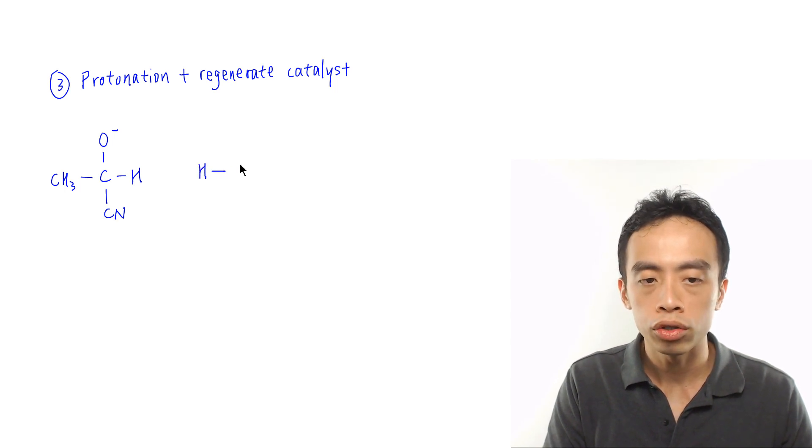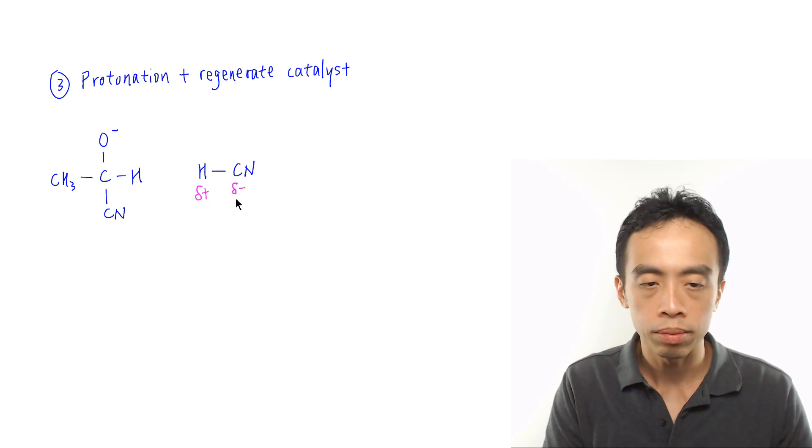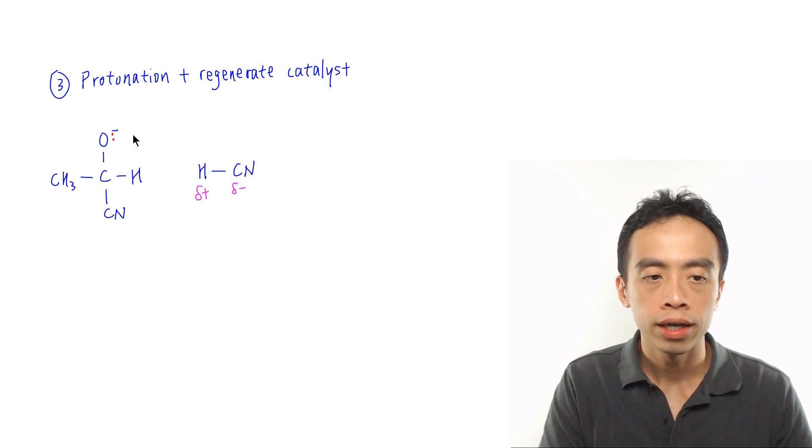We will draw out HCN, which is the reactant in this case. Hydrogen will be a partial positive charge. Carbon will be a partial minus charge. The oxygen will use a lone pair, attack the hydrogen, forms a bond with hydrogen. It will be an OH bond.